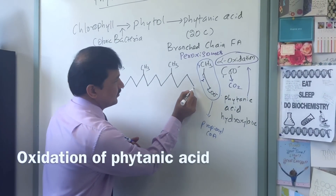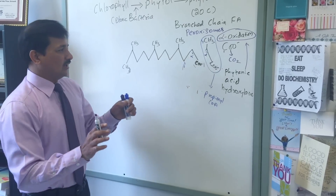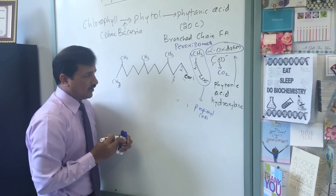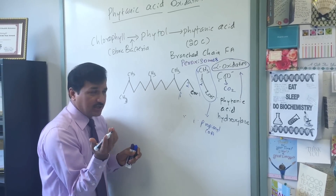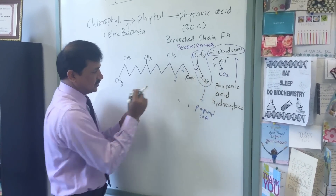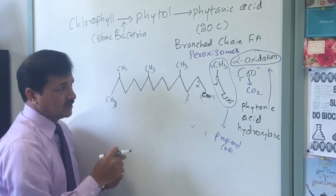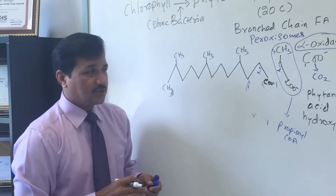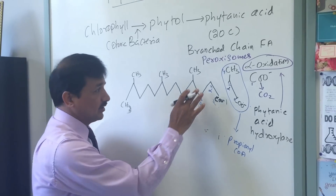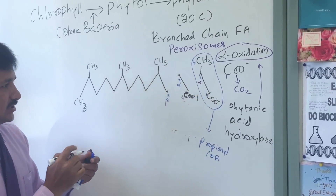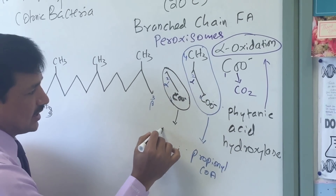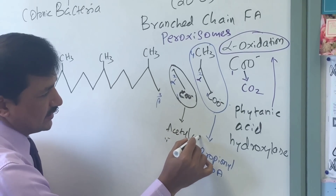Now your fatty acid that is remaining — the numbering changes: this is the first carbon, second carbon, and third carbon. Second carbon is alpha carbon, third carbon is beta carbon, so no problem for beta oxidation. Oxidation of beta carbon occurs, breakage of bond between alpha and beta carbon goes on. The 2-carbon molecule released is acetyl-CoA. Now again your third carbon became the carboxyl carbon, and the numbering changes again.